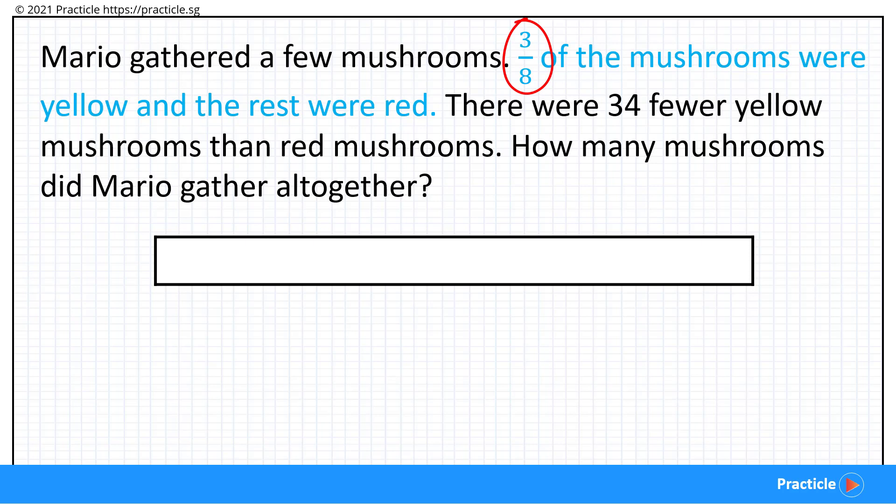When we read the fraction 3/8, it means that when we divide all the mushrooms that Mario gathered into 8 equal parts, we can actually use 3 of these parts to represent the yellow mushrooms that Mario had. So far so good?